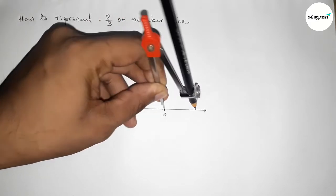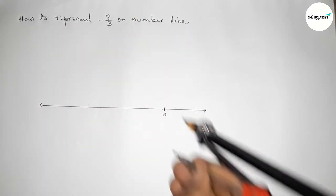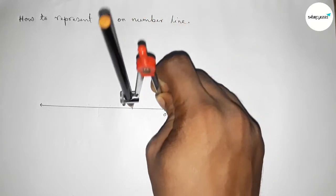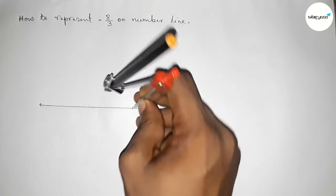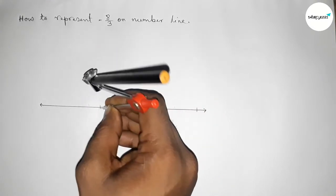Putting the compass on the point zero and cut here with same length. Putting the compass on the point zero and cut here. By this way we have to construct a number line.